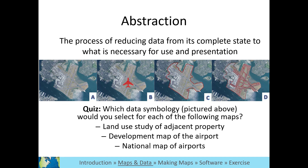Spatial data are also abstracted, meaning they include only what is necessary for your map and analysis. It would be impossible to include every feature that you see in real life on a map. Not only would it create large files, but the map would be difficult to read. This example includes data that have been abstracted in different ways, for different purposes.